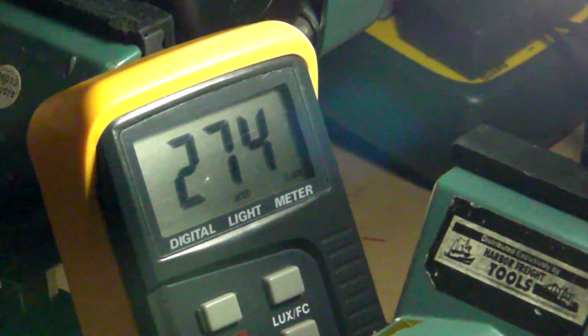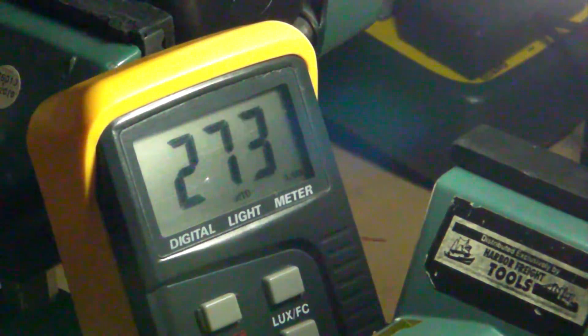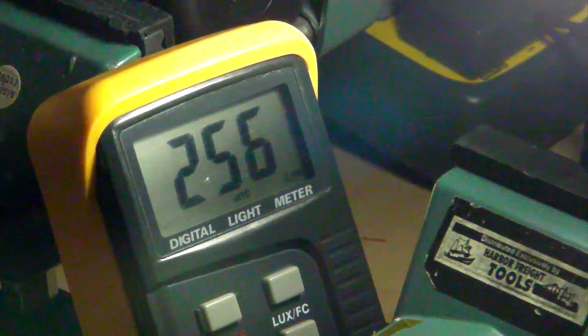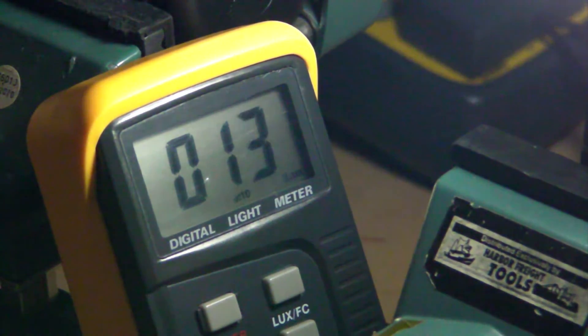And here we go. I'm going to dim it down. By the way, all the other lights in the room are off. I've got the camera on auto-iris this time so it can keep up and be able to see the meter. There's two lux, one lux, and off. It just went out.